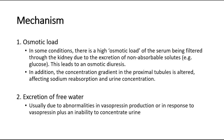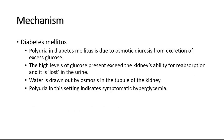Polyuria usually develops via two basic mechanisms: osmotic load and excretion of free water. In some conditions, there is a high osmotic load of the serum being filtered through the kidney due to excretion of non-absorbable solutes such as glucose, leading to osmotic diuresis. The concentration gradient in the proximal tubules is also altered, affecting sodium reabsorption and urine concentration. Another mechanism is the excretion of free water, usually due to abnormalities in vasopressin production or response, plus an inability to concentrate urine.